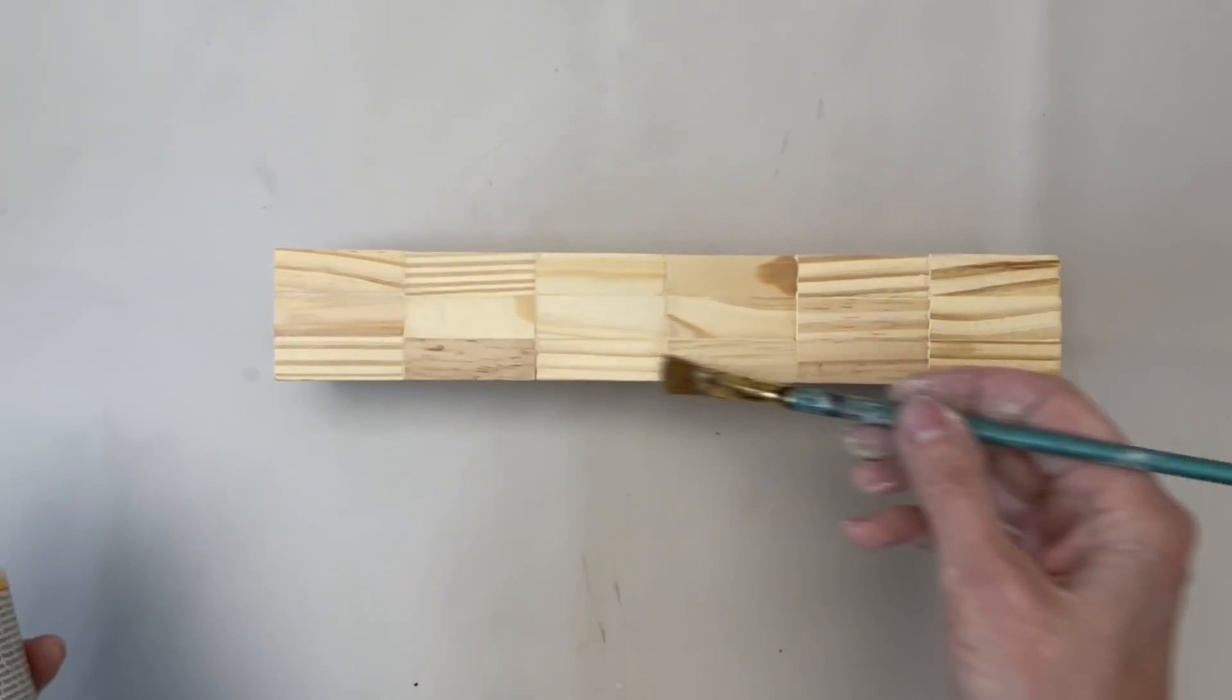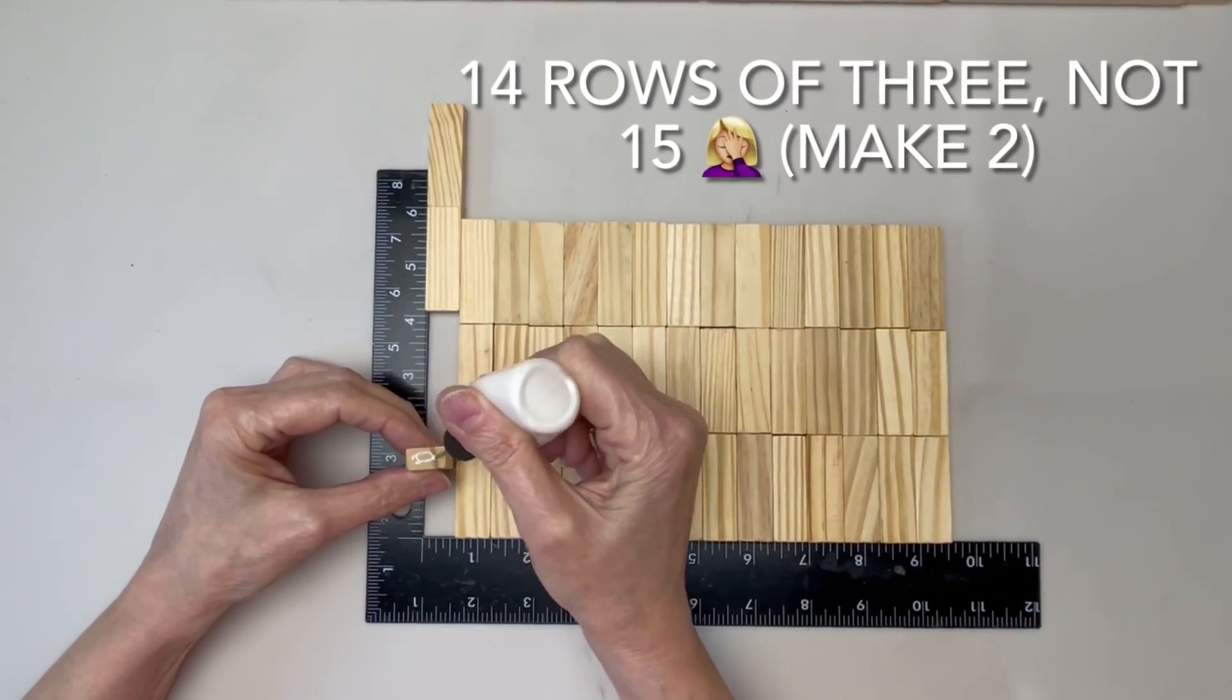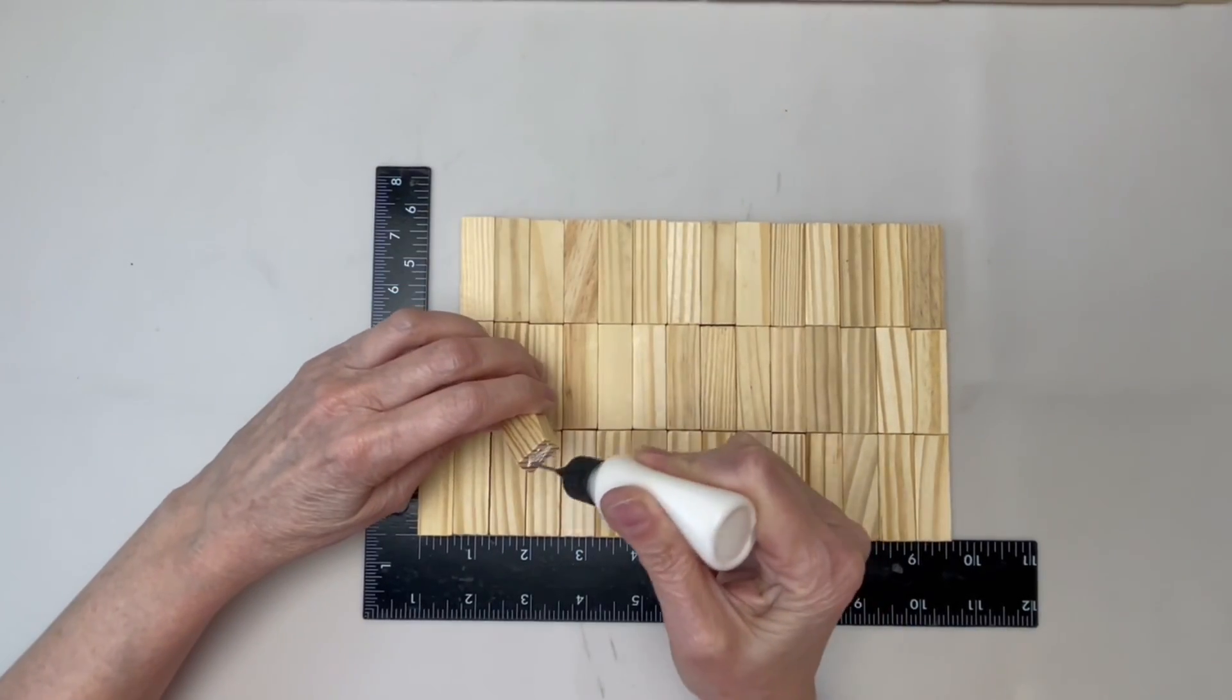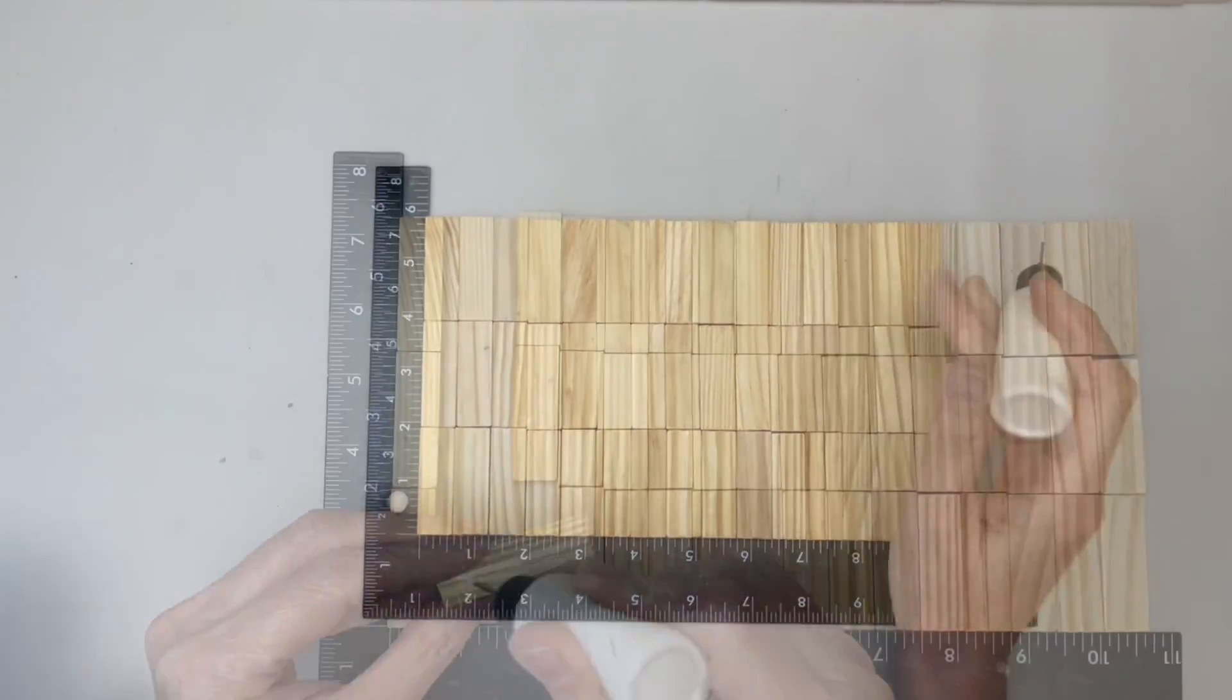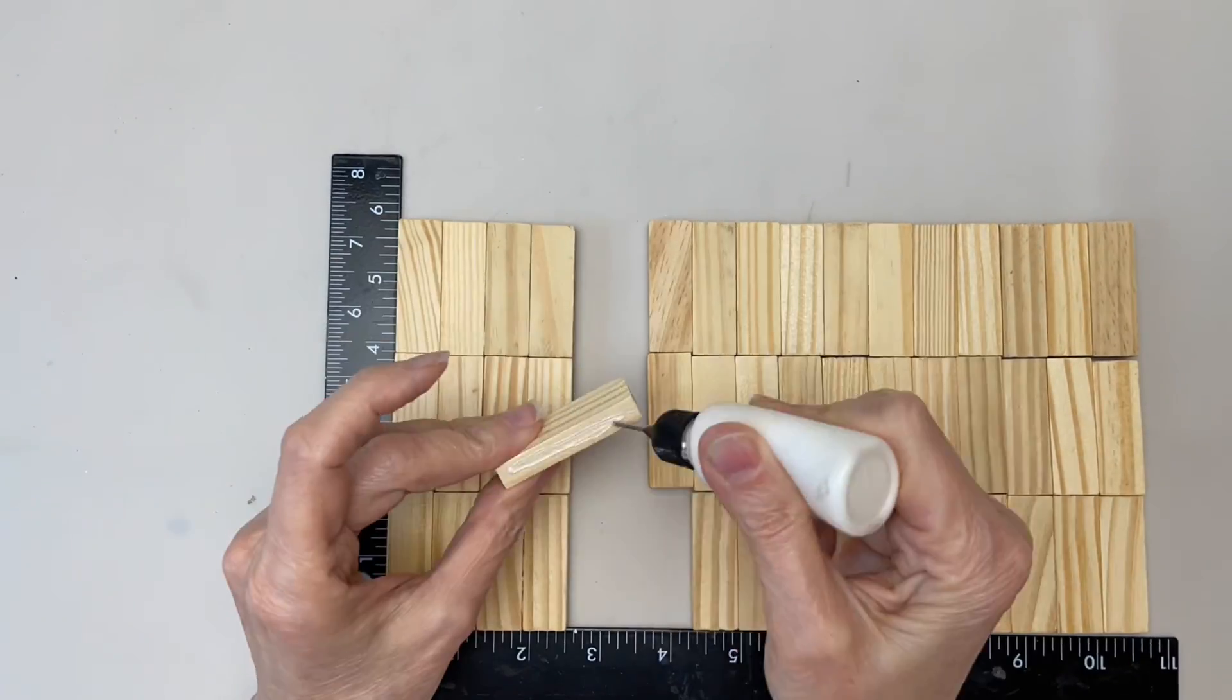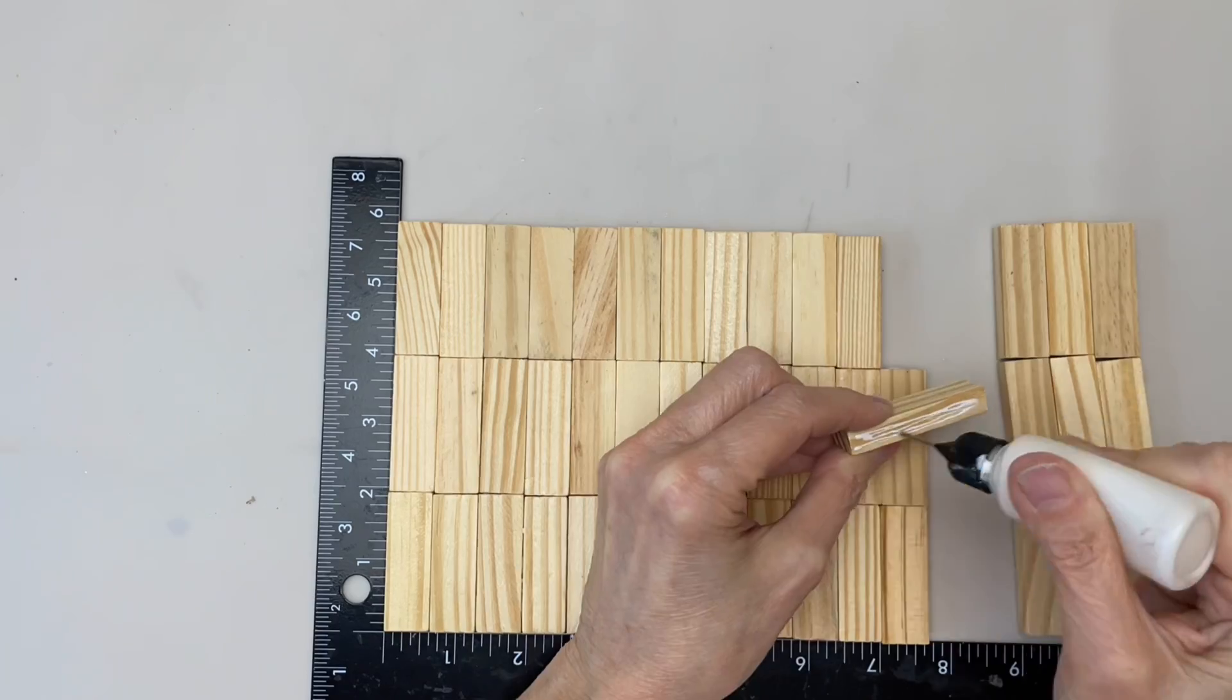Seal the box with Mod Podge. For the base of the fixture, glue 42 blocks together. Glue them three tall by 14 wide. It's a good idea to dry fit these before you glue them together. This layer, I did that, but on the second layer I did not. By the way, you're supposed to make two of these, but you'll see that coming up.